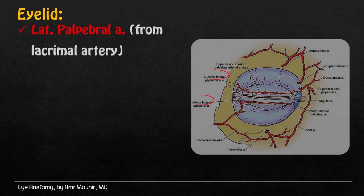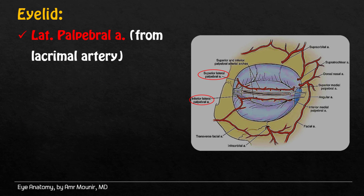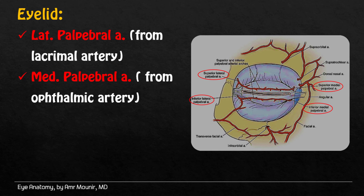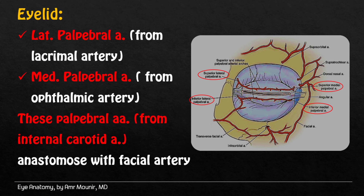Eyelids: the lateral pulpebral artery from the lacrimal artery supplies the lateral part of the eyelid, while the medial pulpebral artery from the ophthalmic artery supplies the medial part of the eyelid. These pulpebral arteries form internal carotid anastomosis with the facial artery.